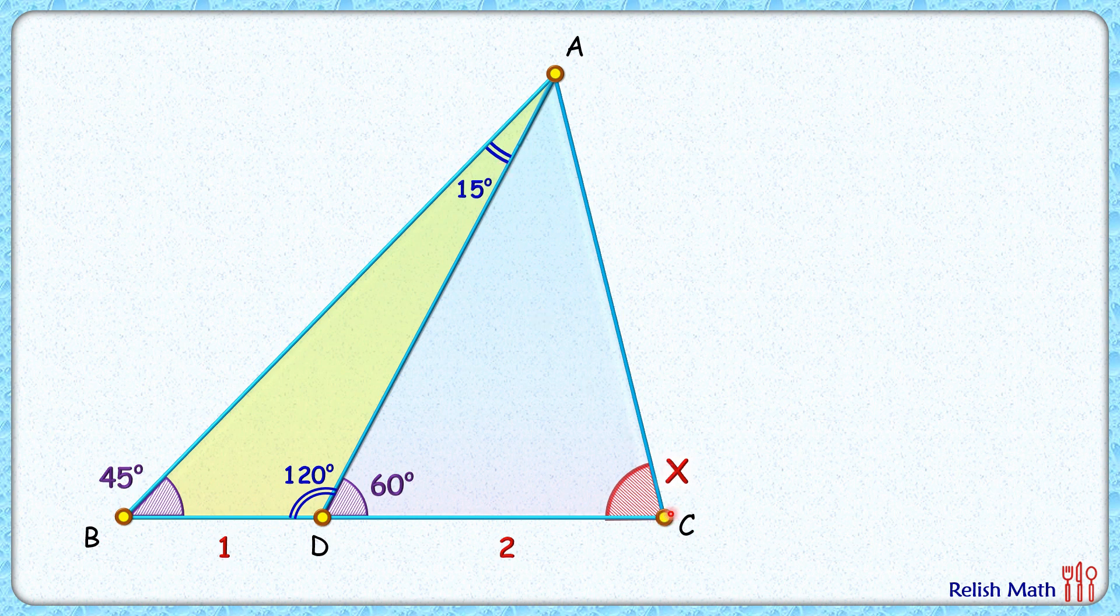Now the magic is you have to drop a perpendicular from point C on AD. Here this angle, by angle sum property, will be 30 degrees.